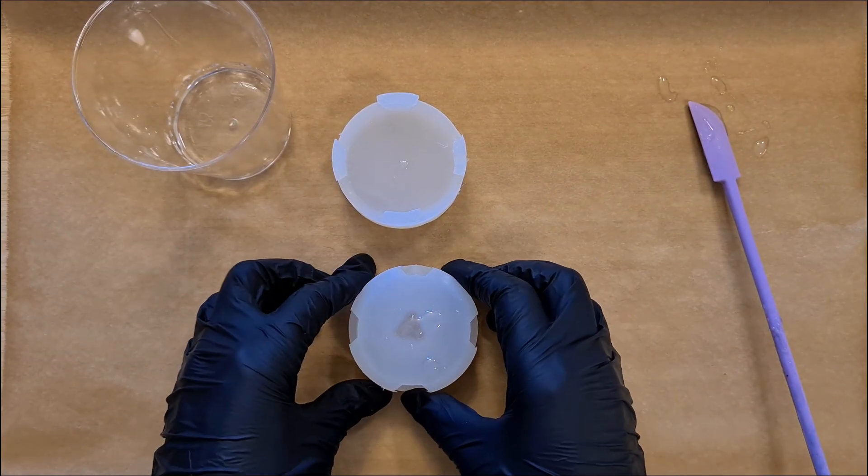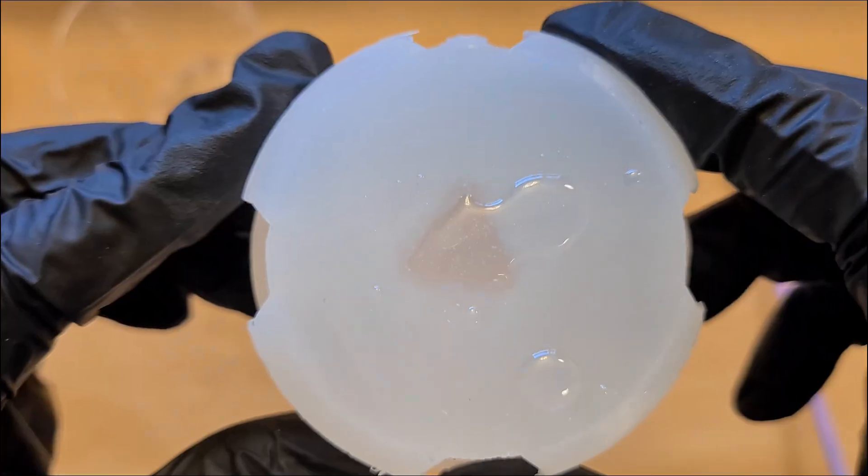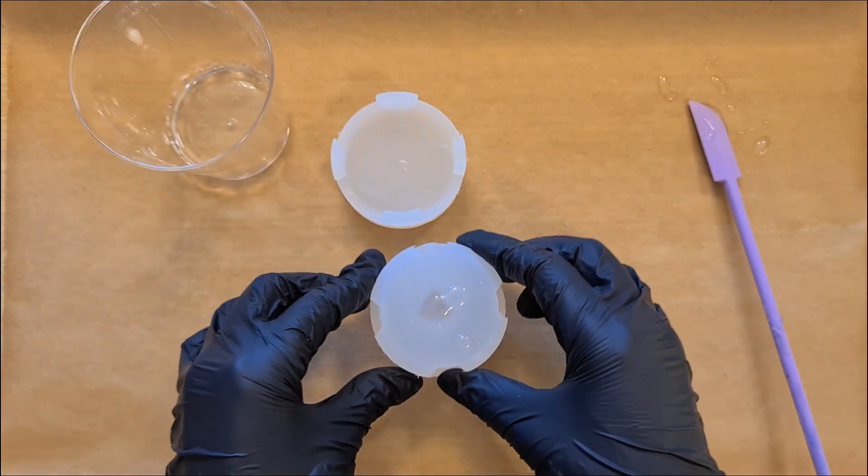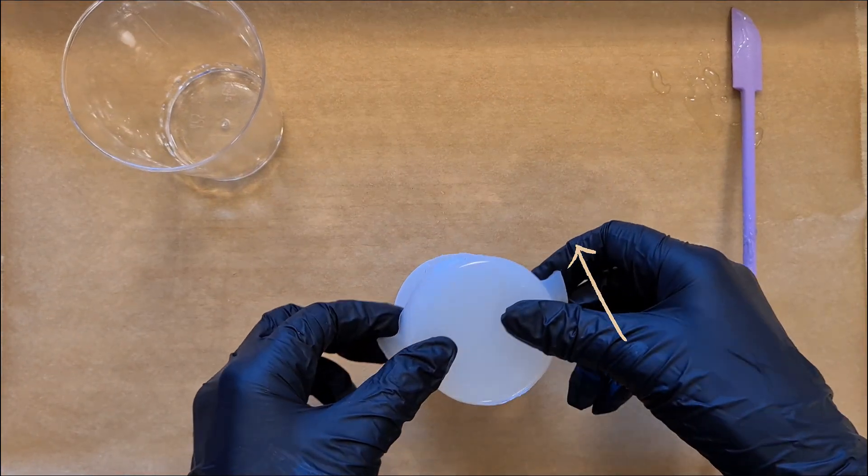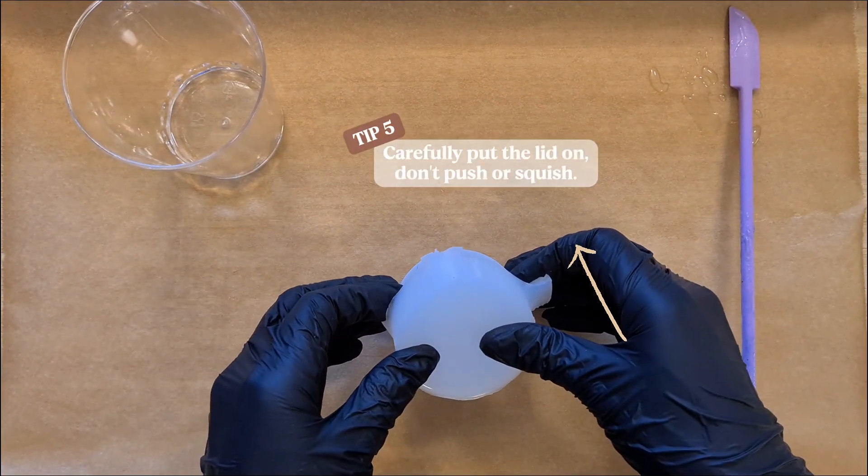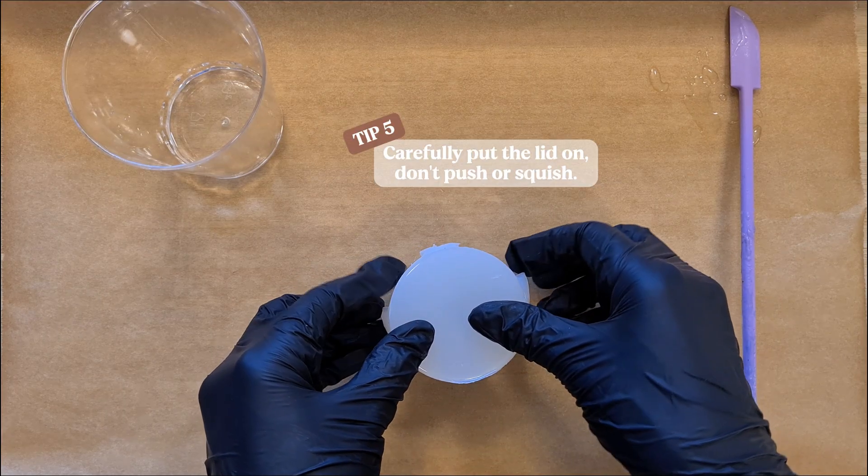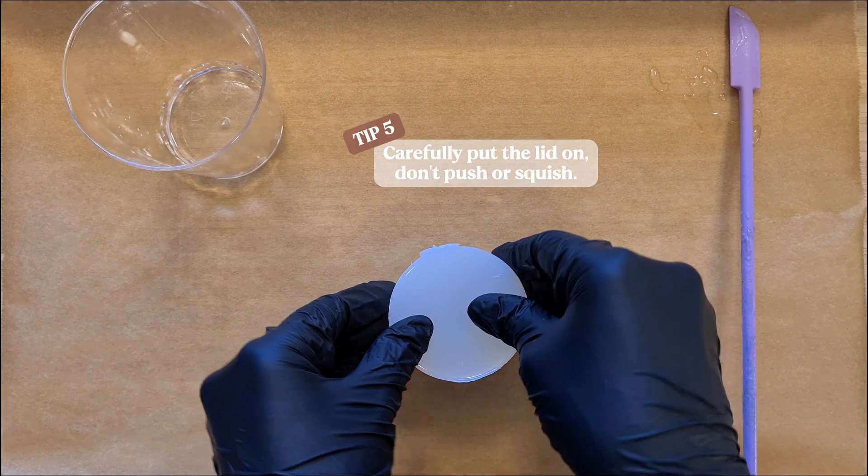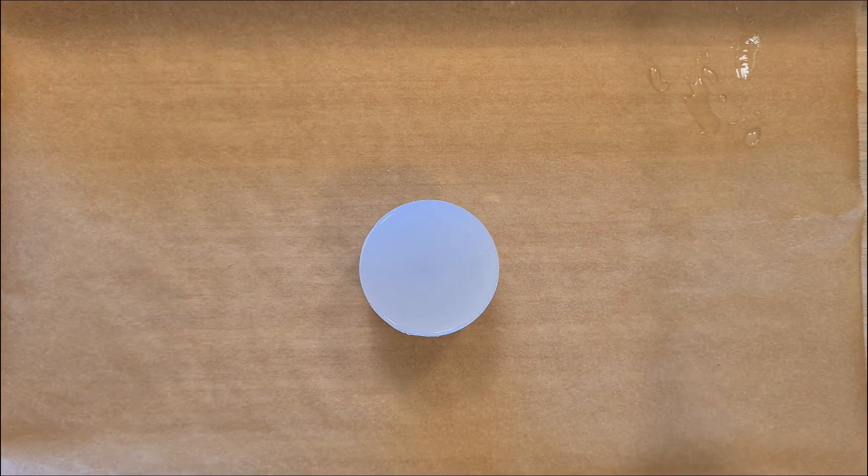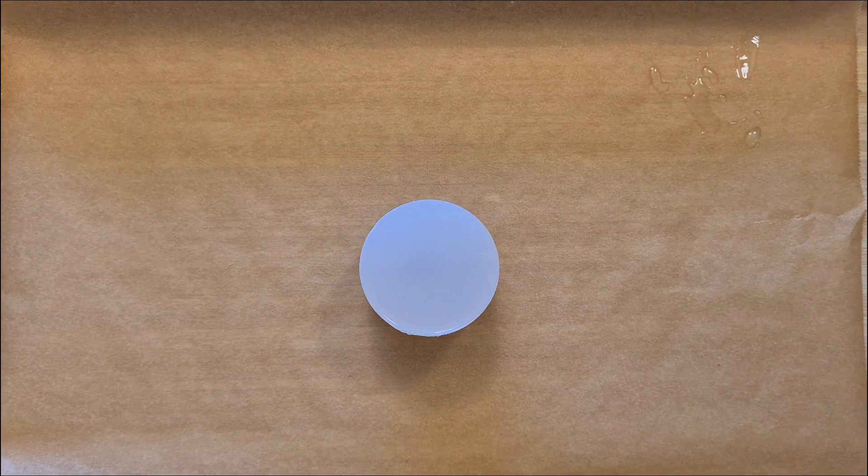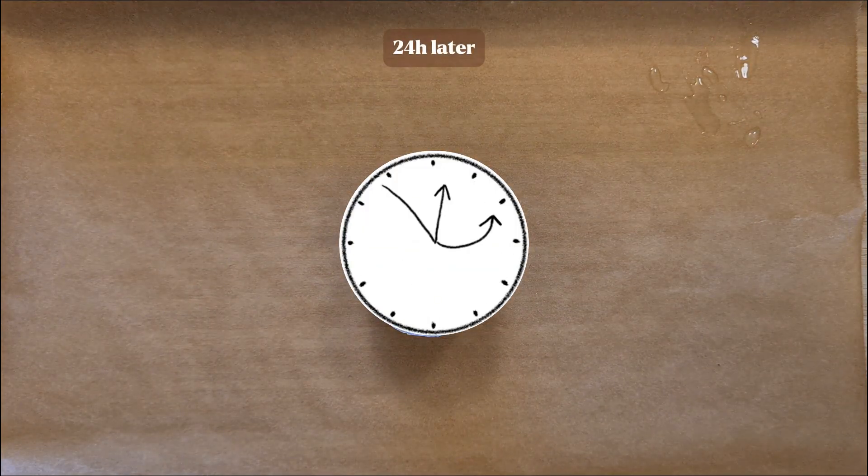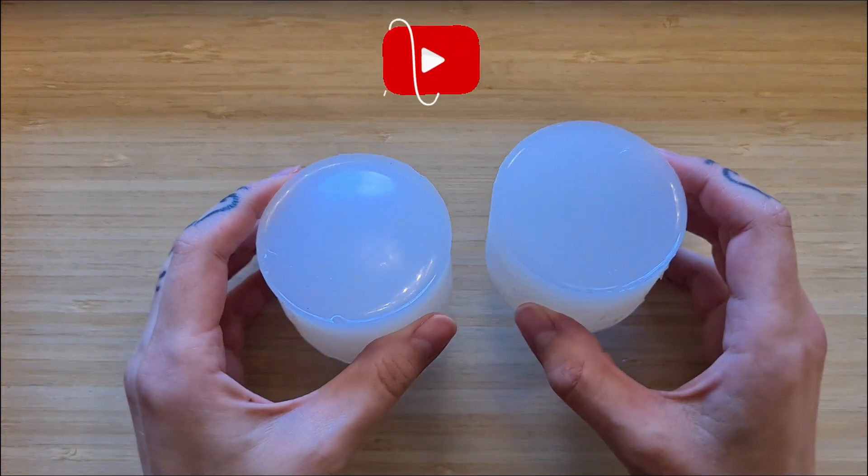For the mold that is not going into the pressure pot, I will very carefully put on the lid, almost going from one side to the other, not pushing, not squishing, just leaving it exactly as it is to avoid that any bubbles are being created during this last stage. And now it's just a matter of time to wait for the resin to cure, so fast forward 24 hours later, it is time to check in with our molds.